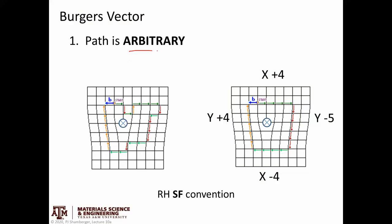The path you choose to follow is arbitrary — there's no reason to follow one path over another. The rule is just that the number of steps moving right must equal the number of steps coming back left, and same with up and down. If you're unclear on where the dislocation is located in the lattice, just make sure your loop is big enough that you've definitely gone around it — for example, going all the way around the outside edge. That guarantees that if there's a dislocation there, you're going around it.